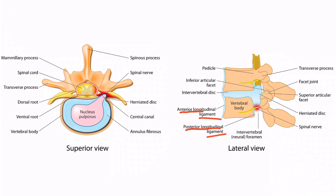If we look at the left part of the image, we can see that the intervertebral disc most commonly protrudes posterolaterally, and it may also protrude right into the central canal. Looking back at the right part of the image, the intervertebral disc is shown herniating posteriorly and inferiorly. So if this were the disc between L3 and L4, then it would be compressing the L4 spinal nerve.